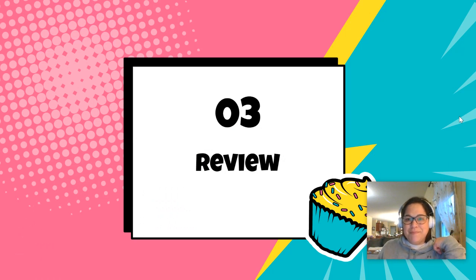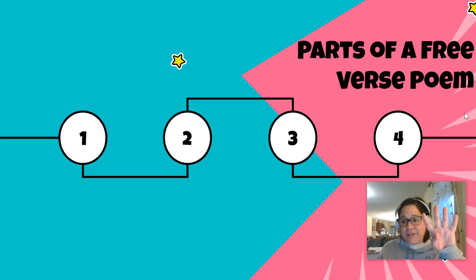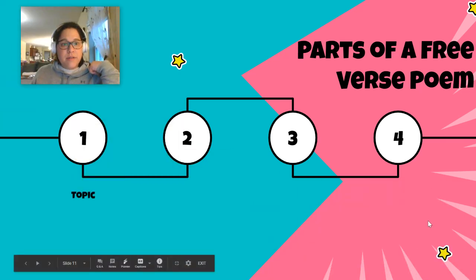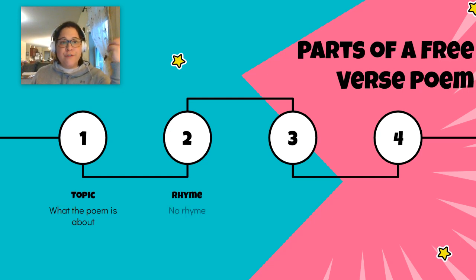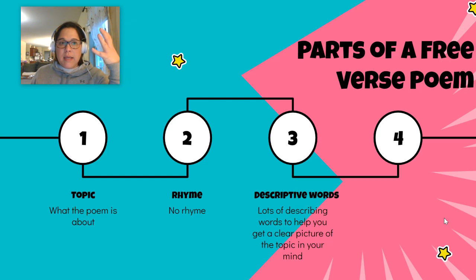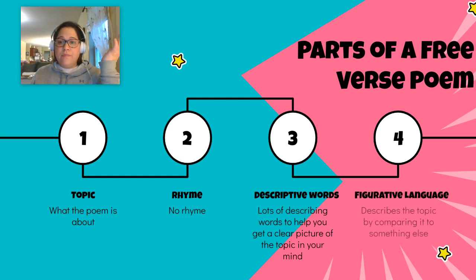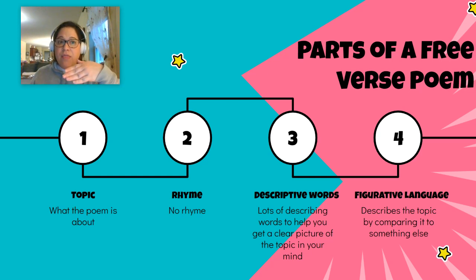Let's move on to our review. This is where we think about the four questions we asked ourselves to decide if our poem was a free verse poem. A free verse poem will always have a clear topic — what the author is focusing on. We ask ourselves: are there rhyming words? A free verse poem will have no rhyme. Are there lots of describing words — is the author using words that help us get a really clear picture in our minds? And is there figurative language — is the topic being compared to something else, and is that comparison giving us a good picture in our minds? Think about comparing the snow to the glass of milk — that was figurative language.